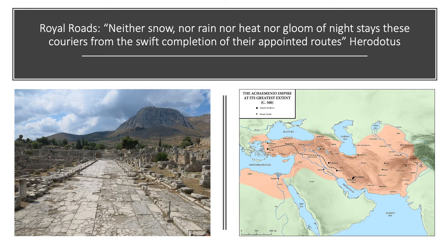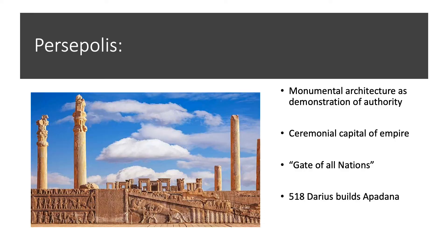Another reflection of how advanced Persian society was is their system of elaborate roads known as royal roads. As Herodotus describes — in a quote that may look familiar as the basis of the modern U.S. postal system's motto — these royal roads stretched from the heart of the empire at Susa all the way to modern-day Turkey at Sardis. They were 20 feet wide, paved, with exchange stations along the route where messengers could swap for fresh horses, maintaining their pace. According to Herodotus, messengers could get from Sardis to Susa in only seven days.